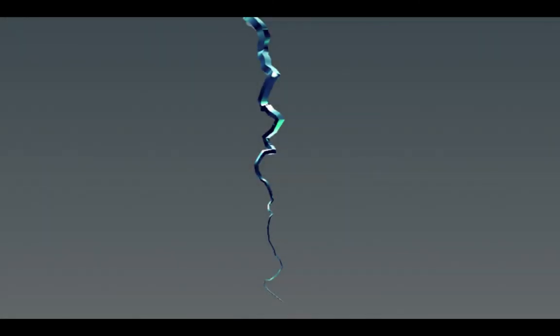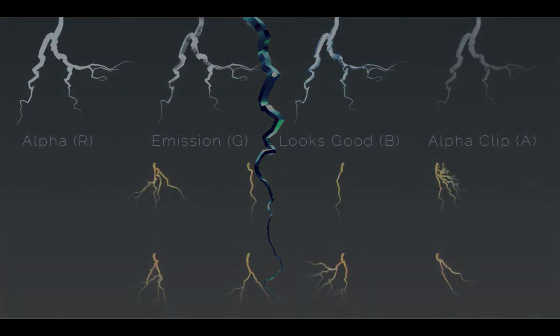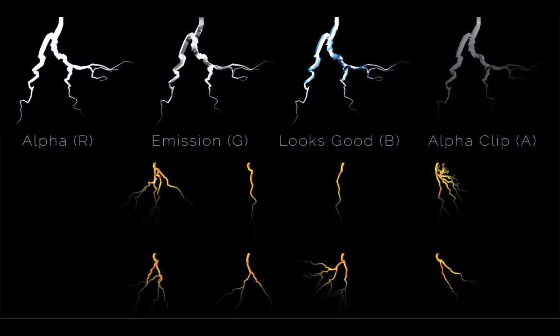In the next video I want to look at outputting the tiled texture map, and I also want to pack as much information into that tiled atlas as I can. We can then take that information back to the Unity side and create a custom shader to give us a lot of control over the look of our lightning. Hope you found this useful — see you next video.